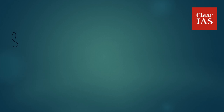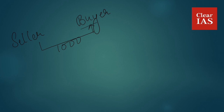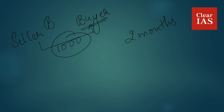Let us understand what is meant by discounting of bills. Consider there is a seller and a buyer. The seller sells goods to the buyer to the tune of 1000 rupees. However, the buyer does not have 1000 rupees to pay the seller right now, but he is confident that he will be able to pay this amount within a period of 2 months. So a bill will be raised between the seller and the buyer.